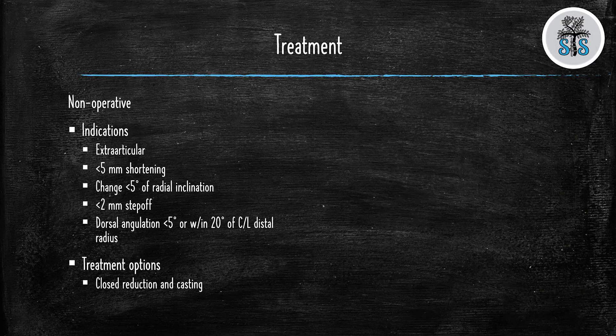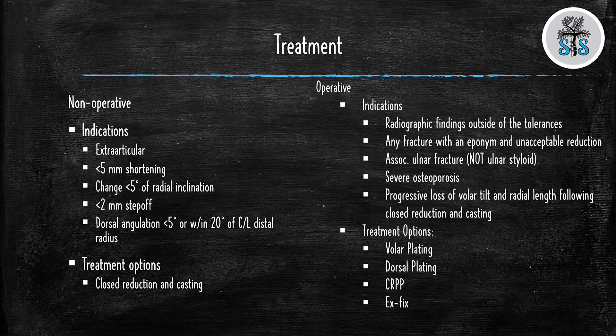Some treatment options. Non-operative: if we're within those acceptable criteria, we can treat with closed reduction and casting. Operative: if we're outside of those tolerances, we have to take it to surgery. Any fracture with an eponym most likely is going to surgery. Associated ulnar fracture — not including an ulnar styloid — severe osteoporosis, or failed non-operative treatment are also operative indications. Options include volar or dorsal plating, pinning, or an external fixator.